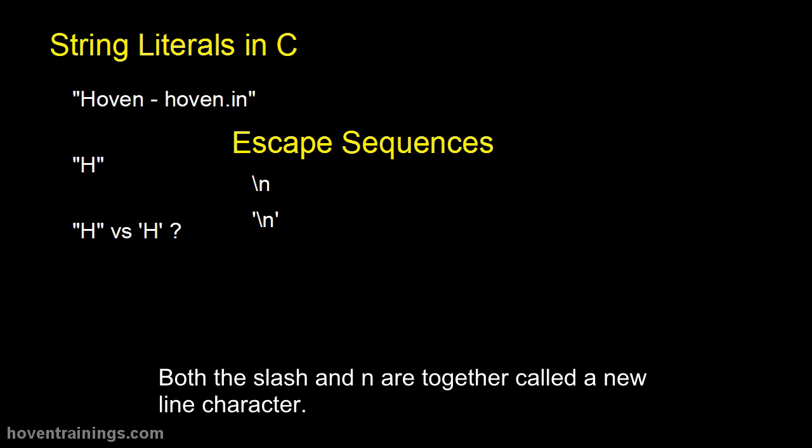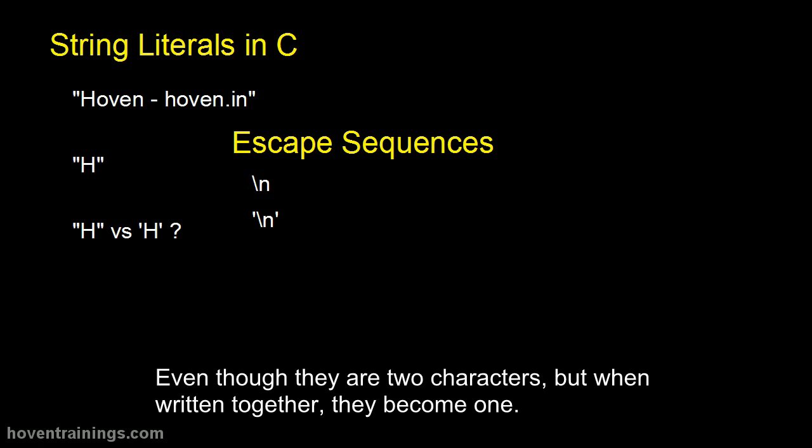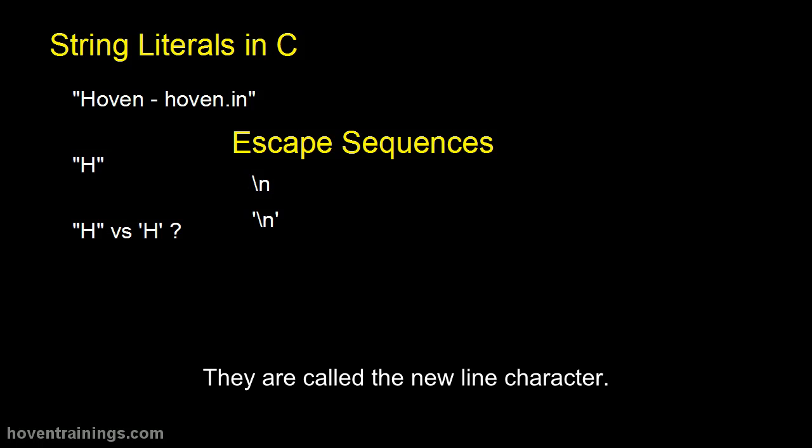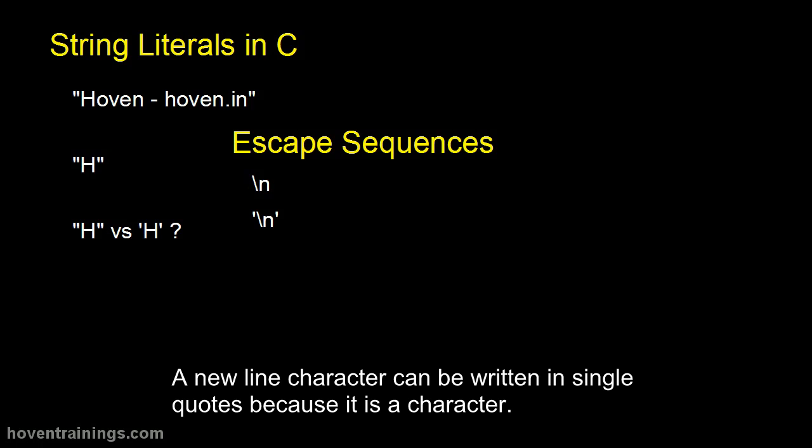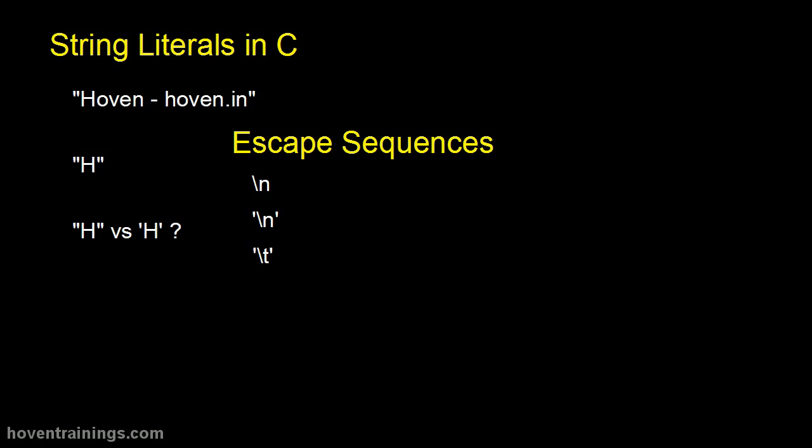Both the slash and N are together called a new line character. Even though they are two characters, but when written together, they become one. They are called the new line character. A new line character can be written in single quotes because it is a character. This is the null character having the ASCII value of zero. This is a very important character in C as we shall see later.